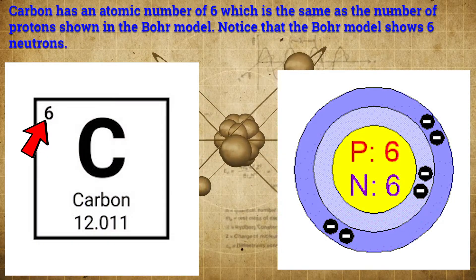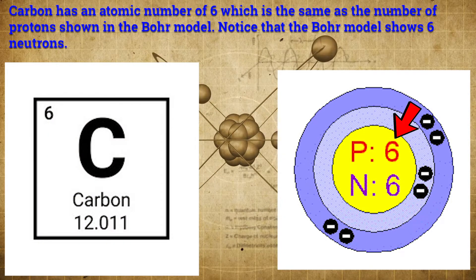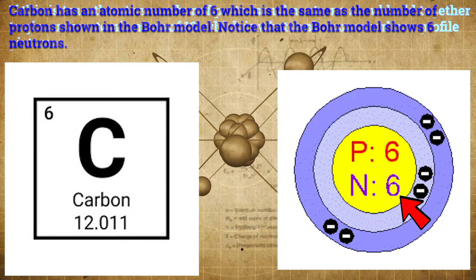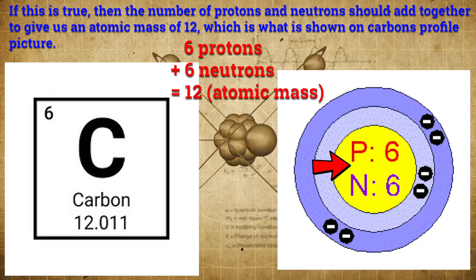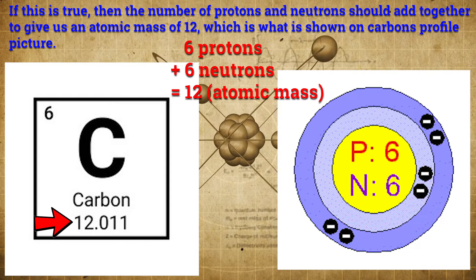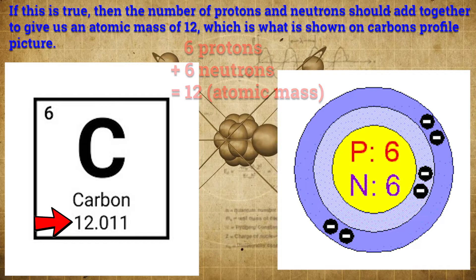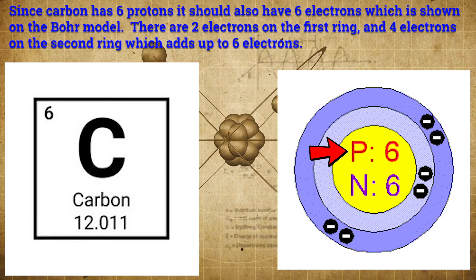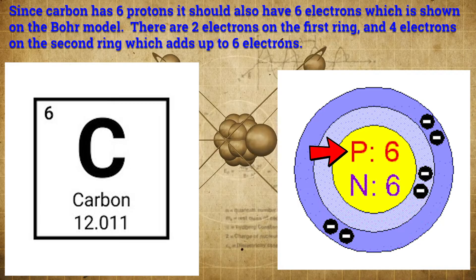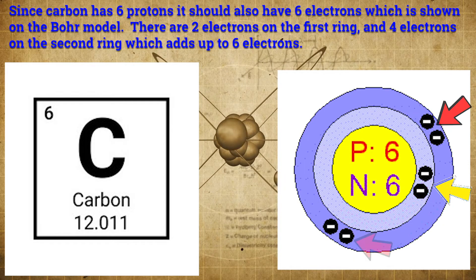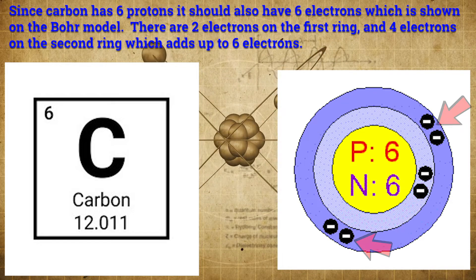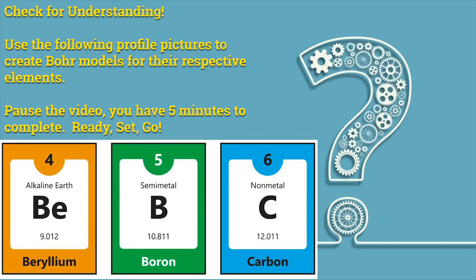So now let's take a look at the profile picture and Bohr model for carbon. Carbon has an atomic number of 6, which is the same as the number of protons shown in the Bohr model. Notice that the Bohr model shows 6 neutrons. If this is true, then the number of protons and neutrons should add together to give us an atomic mass of 12, which is what is shown on carbon's profile picture. Since carbon has 6 protons, it should also have 6 electrons, which is shown on the Bohr model. There are 2 electrons on the first ring and 4 electrons on the second ring, which adds up to 6 electrons.